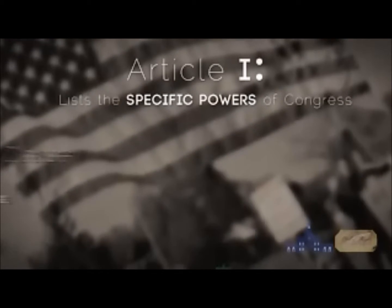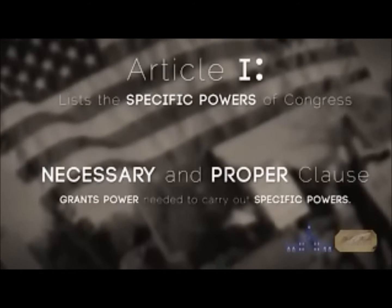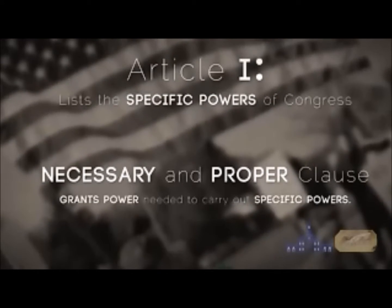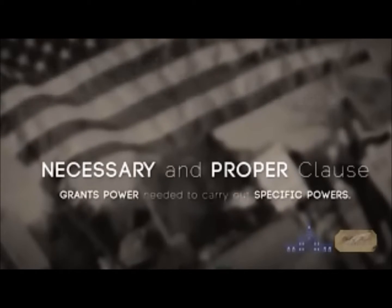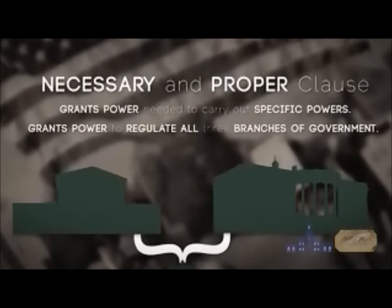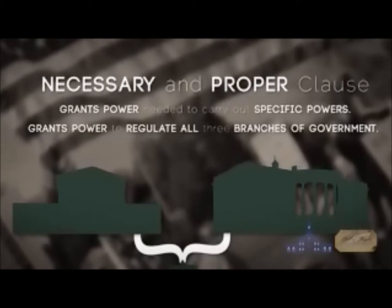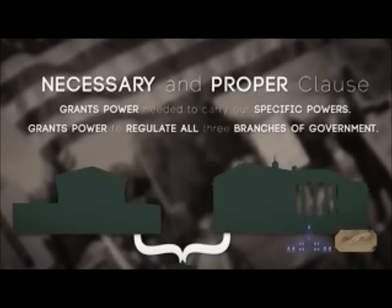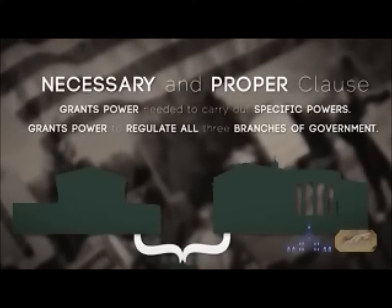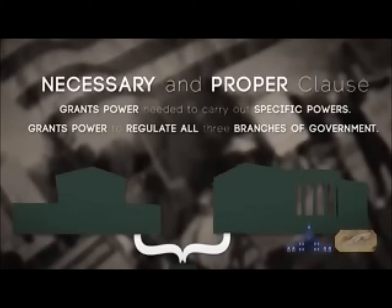Article 1 establishing the legislative branch is far longer than the articles establishing the other two. The specific powers of Congress are listed, while the Necessary and Proper Clause grants the power to make all laws necessary and proper to carry out the listed ones. In addition, the Necessary and Proper Clause grants Congress the power not only to make laws to carry out its own powers, but also all other powers vested by this Constitution in the government of the United States or in any department or officer thereof. Congress can regulate all three branches of government.